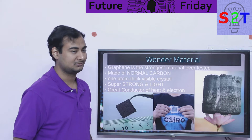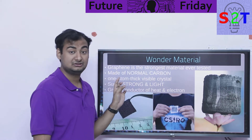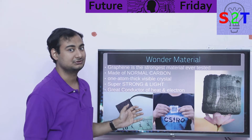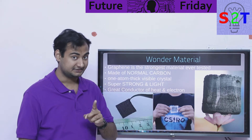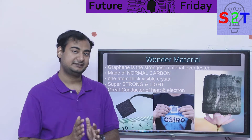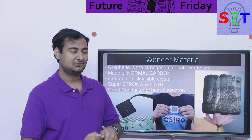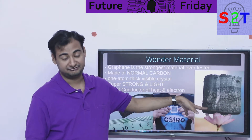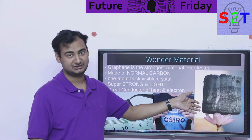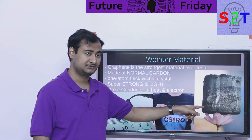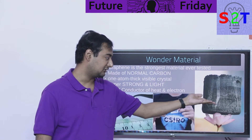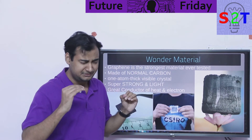Even though it's one atom thick, it's visible because it's absorbing that specific spectrum and becomes translucent. Now, it's not only strong. Making something strong is one thing — your drill bit is strong. But making it light? That's the interesting part. It is very strong and very light. As of now, aerogel mixed with graphene is the lightest solid known to man.